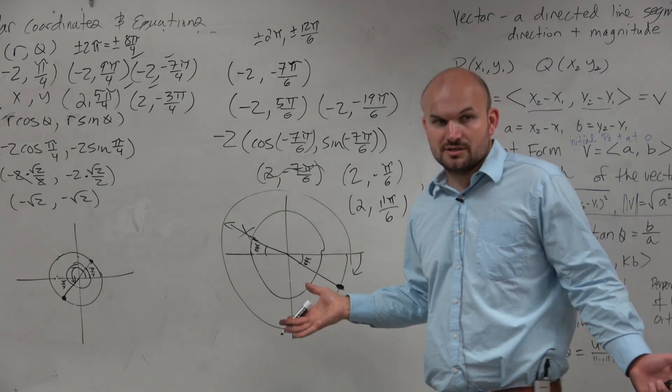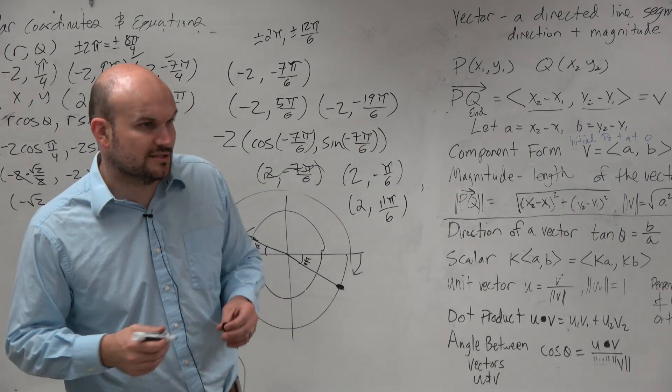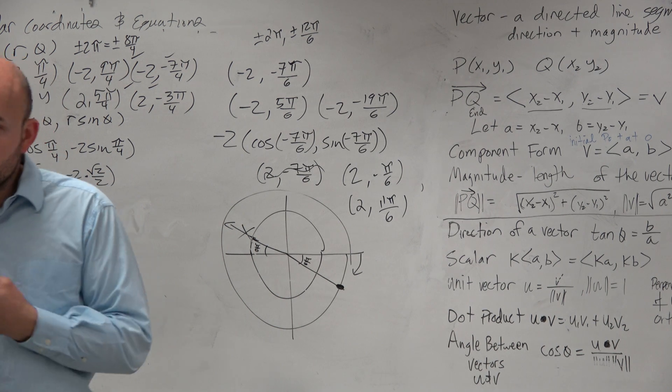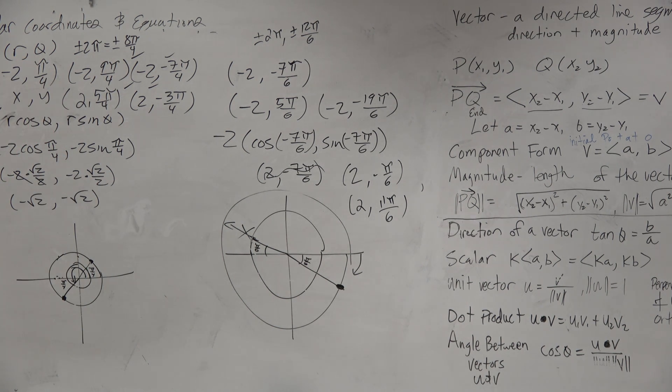I mean, then the options are limitless, right? You could just keep on adding and subtracting 2π. Okay, so that's just another way to look at it. All right.